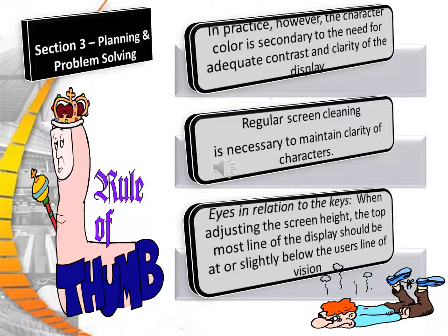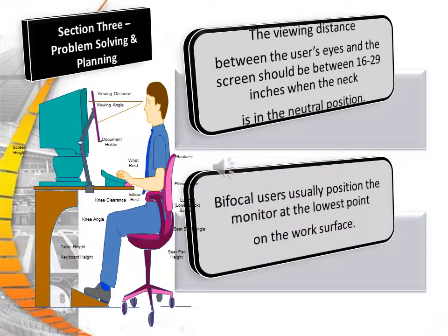Regular screen cleaning is necessary to maintain the clarity of characters. When adjusting the screen height, the topmost line of the display should be at or slightly below the user's line of vision. The viewing distance between the user's eyes and the screen should be between 16 and 29 inches when the neck is in a neutral position. Bifocal users will position the monitor at the lowest point of the work surface.